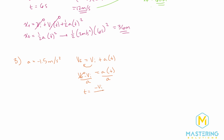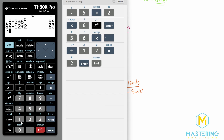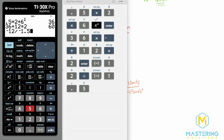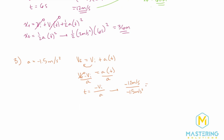Rearranging, time equals v_final minus v_initial divided by acceleration. Since we're stopping, v_final is zero, so time equals negative v_initial divided by acceleration. We're still going at 12 meters per second at the start of this section since we were just coasting. So time equals negative 12 meters per second divided by negative 1.5 meters per second squared. The negatives cancel, giving us a time of 8 seconds for the last section.